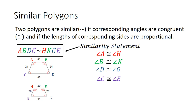Last, we have angle C is congruent to angle E. C and E are both in purple — C has one arc and E has one arc, which tells us they're congruent. C is last in the similarity statement, and so is E, so angle C is congruent to angle E.